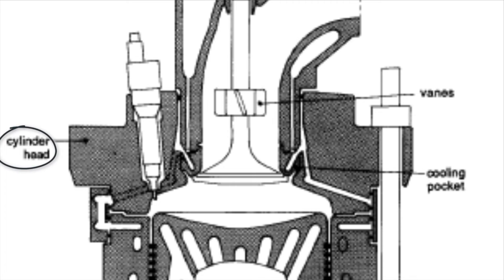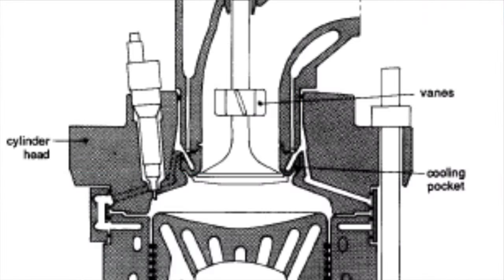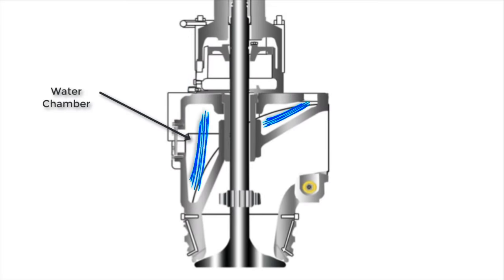The cylinder head also forms a part of jacket water system as it is provided with bores and passages. The water comes into these passages from the liner outlet and cools down the cylinder head. The exhaust valve is connected on top of the cylinder head and outlet from the cylinder head bores come into the exhaust valve water chamber to cool down the valve.